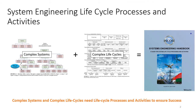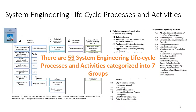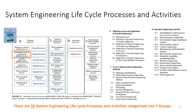As introduced in the previous videos, the combination of complex systems along with complex life cycles requires a more systematic, structured approach to engineering. This process is captured in the system engineering handbook with the system life cycle processes and activities. There are a total of 59 system engineering life cycle processes and activities, grouped into seven groups. The process we're going to look at in this video is the second in the technical processes: the stakeholder needs and requirements definition process.